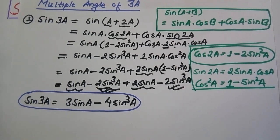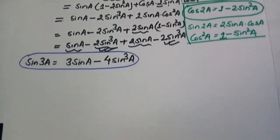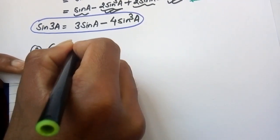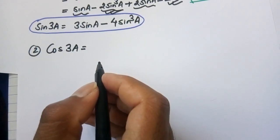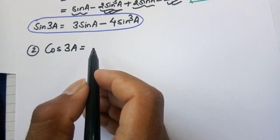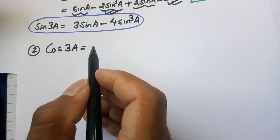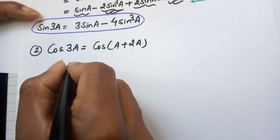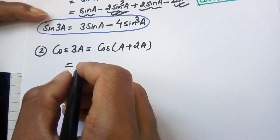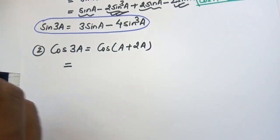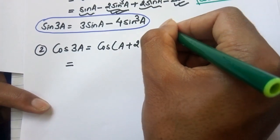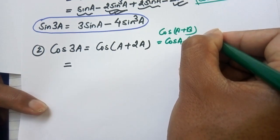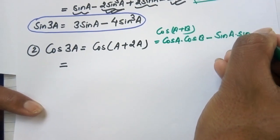Now after that I have to derive cos 3a. Cos 3a can be written as cos(2a + a). Applying the compound angle formula: cos(a+b) = cos a dot cos b minus sine a dot sine b.